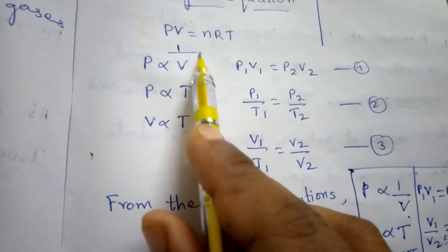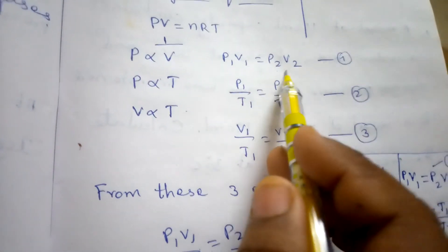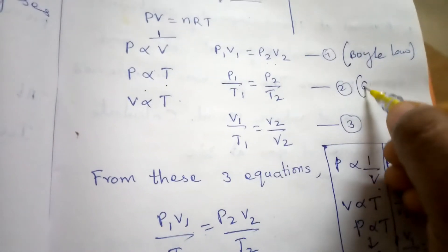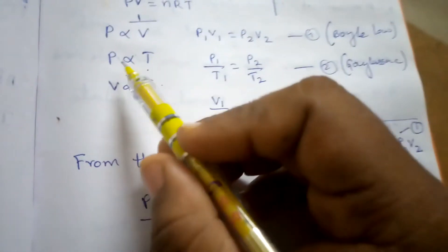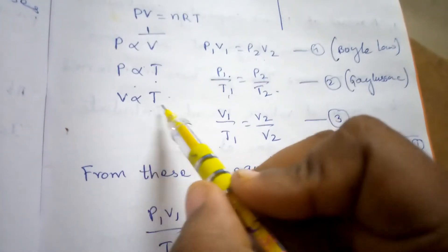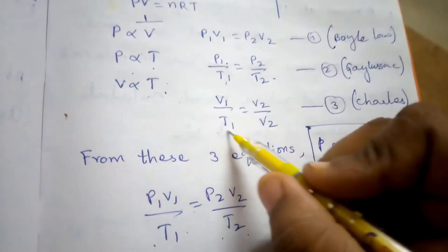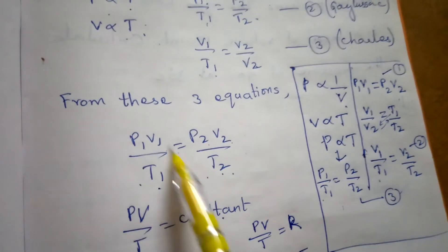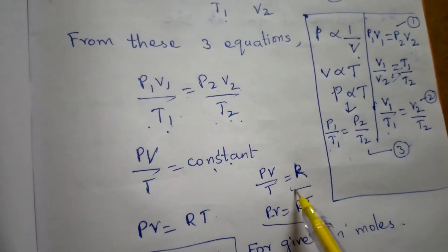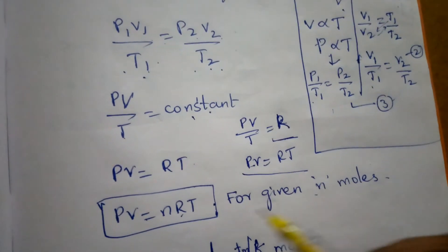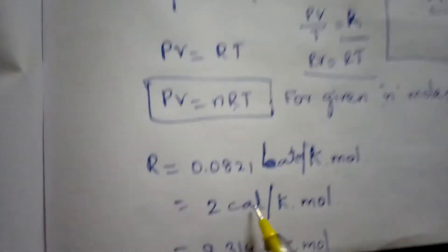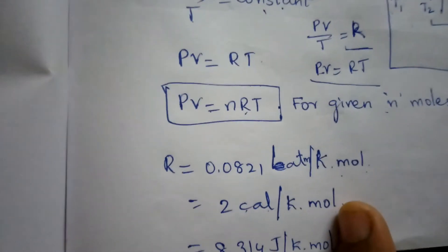To recap the derivation: pressure inversely proportional to volume is Boyle's law (P1V1 = P2V2); pressure proportional to temperature is Gay-Lussac's law (P1/T1 = P2/T2); volume proportional to temperature is Charles's law (V1/T1 = V2/T2). Combining gives PV/T = R, so PV = nRT. R = 0.0821 L·atm/K·mol, or 2 cal/K·mol, or 8.314 J/K·mol.